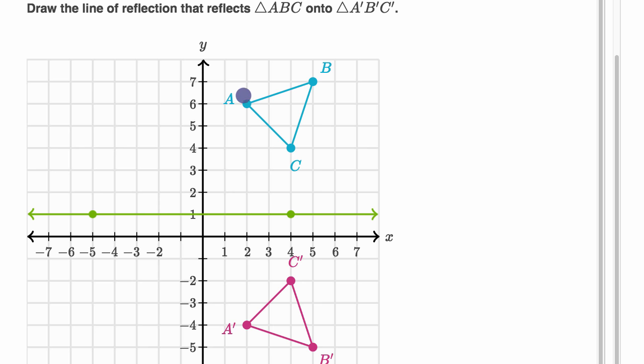Let's see if it works for A and A prime. A is one, two, three, four, five units above it. A prime is one, two, three, four, five units below it. So that's looking good.